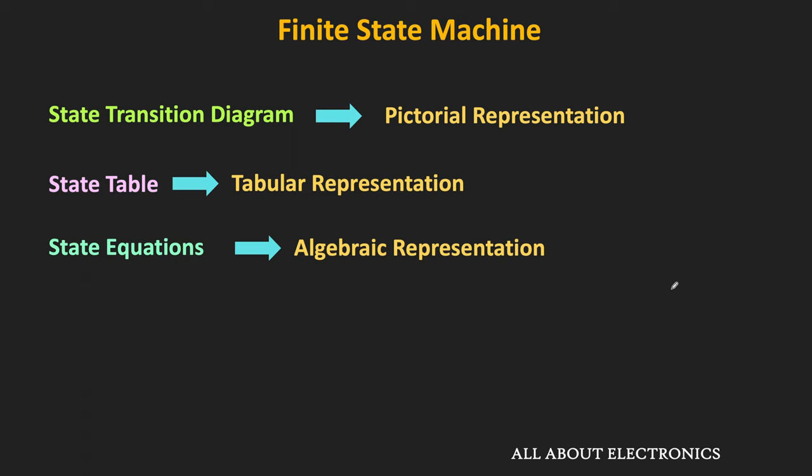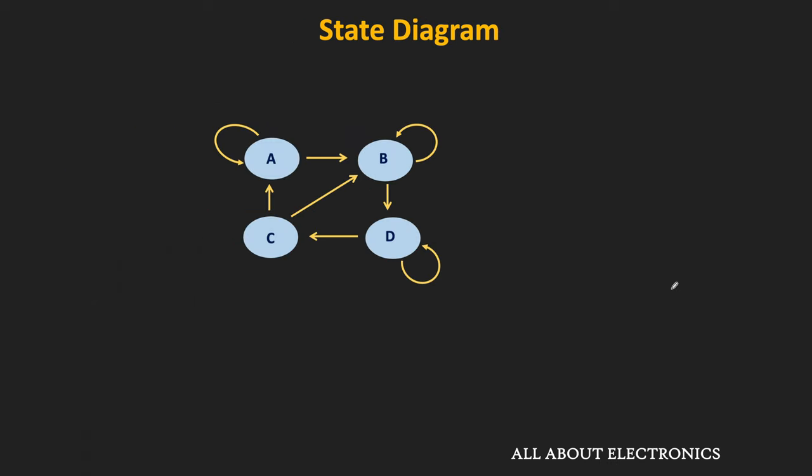In the earlier videos of the flip-flop and the counters, we have already discussed about the state table and the state equations, but we haven't talked much about the state diagram. So in this video let us understand it in detail. The state diagram is a pictorial way of representing the behavior of any finite state machine or the sequential circuit.